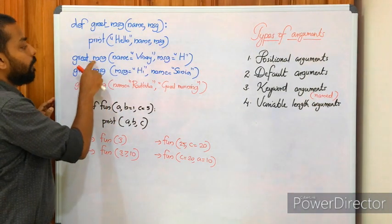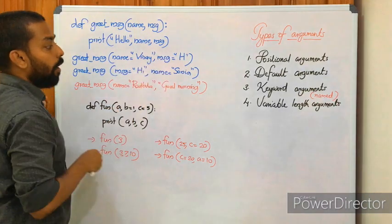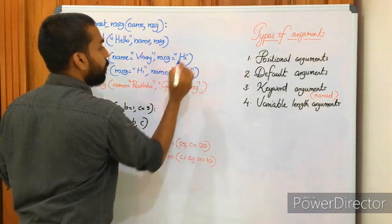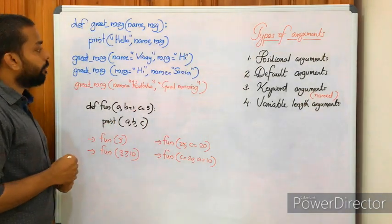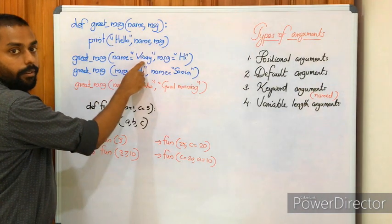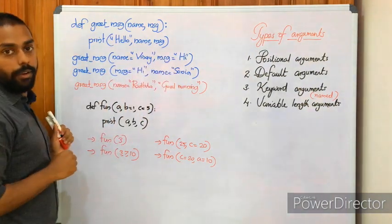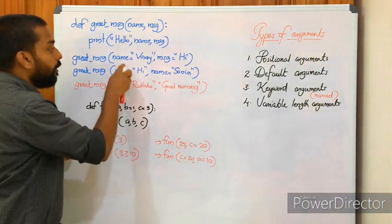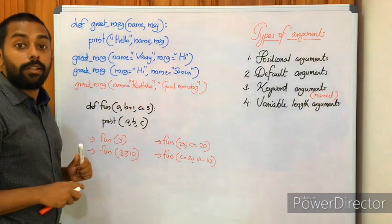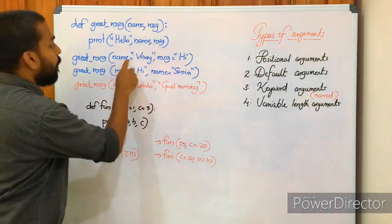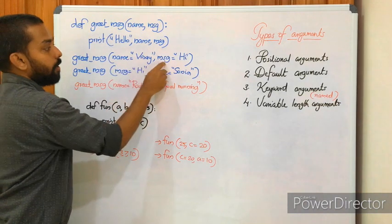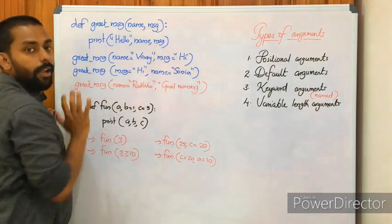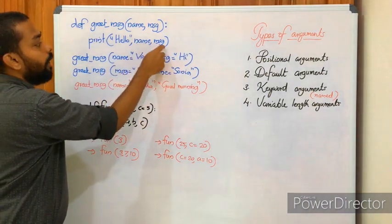We have two function calling statements. The first is greet_message(name='vinay', message='hi'). Here we have used the concept of keyword arguments. Name and message are the keywords and we are passing name='vinay' and message='hi' to the function. In the function definition, name gets 'vinay' and message gets 'hi', so it prints 'hello vinay hi'.